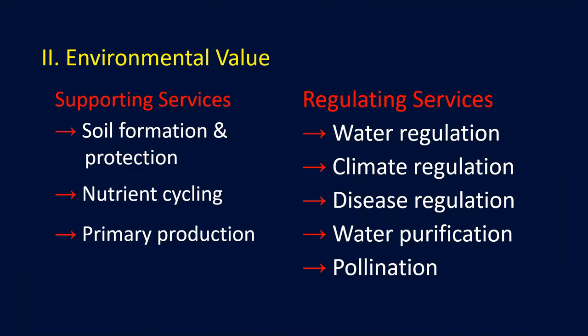The next most important value of biodiversity is environmental value. The environmental value of biodiversity can be understood by examining the underlying processes of each ecosystem and identifying the services provided by it. These environmental values can be studied under two headings: supporting services — like soil formation and protection, nutrient cycling, and primary production — and regulating services — like water regulation, climate regulation, disease regulation, water purification, and pollination.